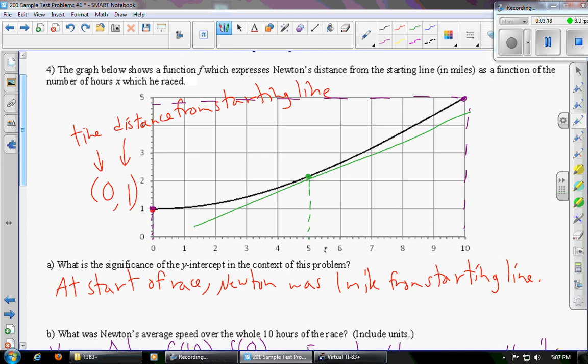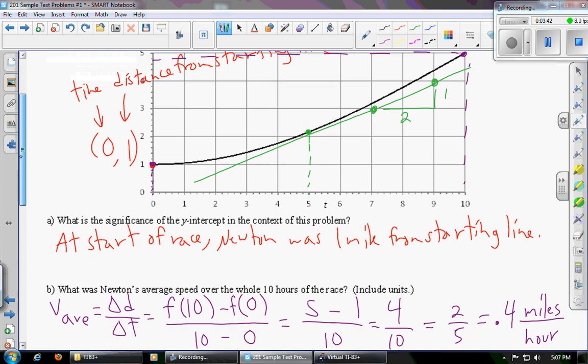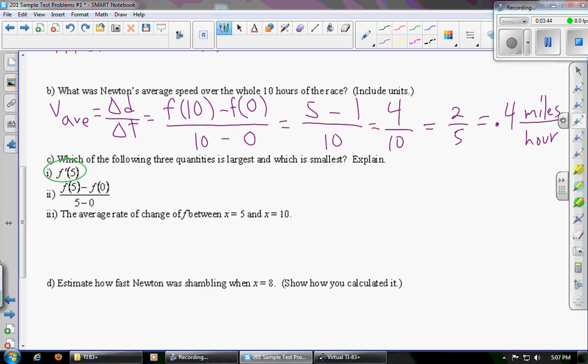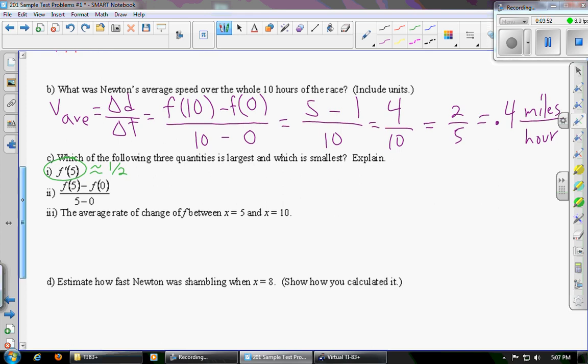And once you've got that drawn, we're going to find the slope of the tangent line, literally by counting boxes. So we're just going to pick two points that look like they're near the grid someplace. So I guess we'll say this point over here is close enough to the grid. There's another point that's close enough to the grid. And so we're going to count rise over run. So we rose one, it ran two. So the slope is just one half. So ballpark, I'm going to say that's around a half. Half a mile an hour was roughly his instantaneous velocity when t was five hours.